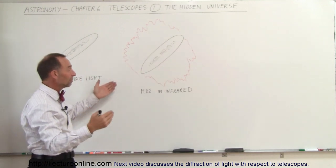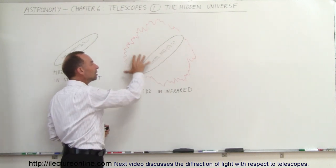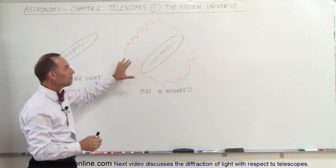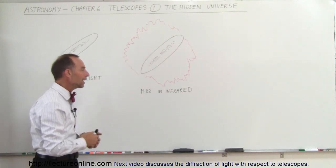And so the question then begs, what is that stuff? And so by studying that infrared radiation coming from that region, we can start developing theories about what that may be and help us understand how galaxies are formed and what they're made out of.